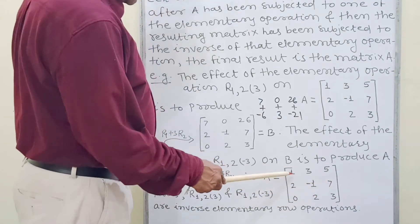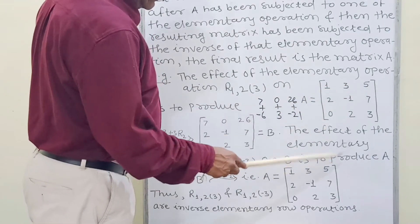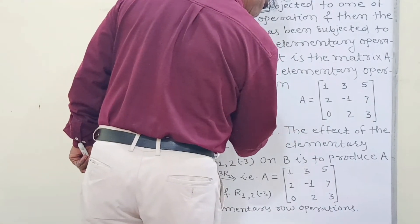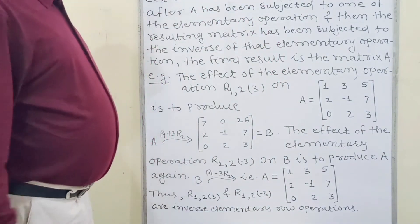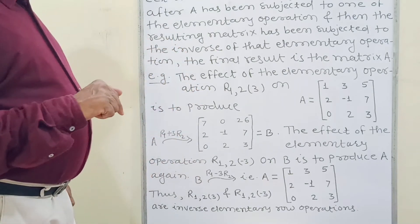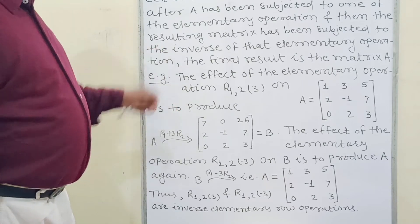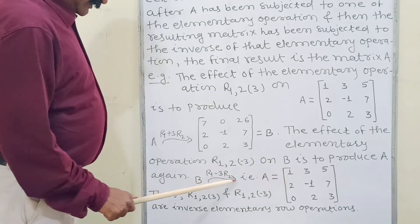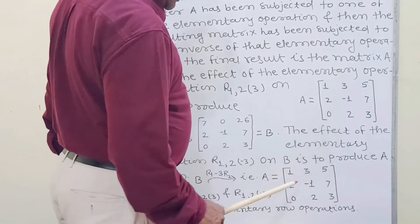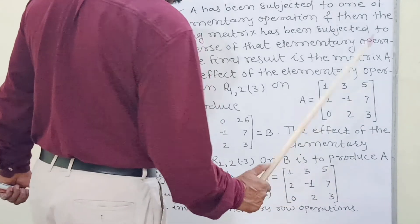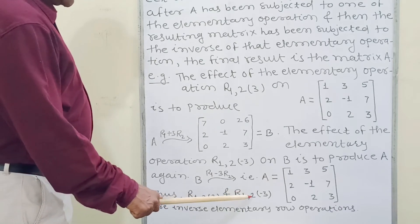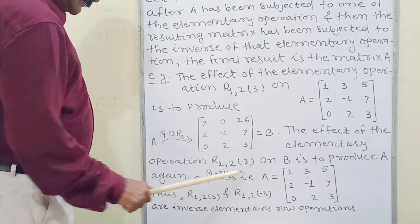R1 becomes [1, 3, 5], and the remaining rows are [2, -1, 7; 0, 2, 3]. Applying R1 minus 3R2 on B gives A again: A is equal to matrix form [1, 3, 5; 2, -1, 7; 0, 2, 3].